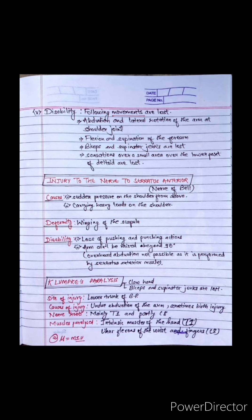Nerve roots involved are mainly T1 and partly C8. Muscles paralyzed are intrinsic muscles of the hand (T1) and ulnar flexors of the wrist and fingers (C8). We can remember the muscles paralyzed in Klumpke's paralysis using a mnemonic MIU: M for muscles, I for intrinsic muscles of the hand, and U for ulnar flexors of the wrist and fingers.